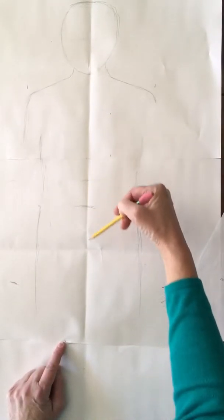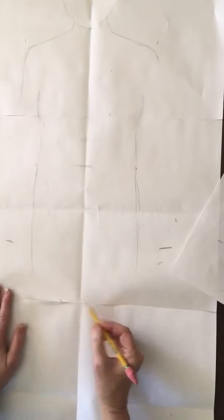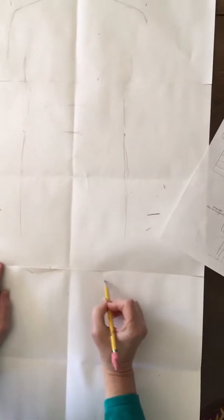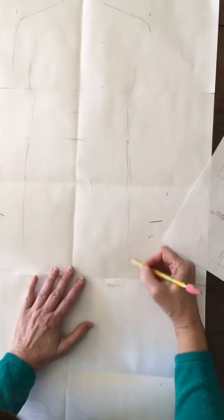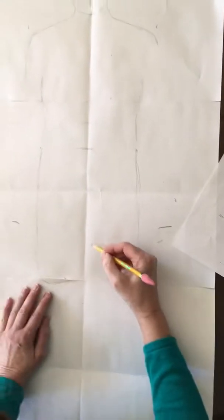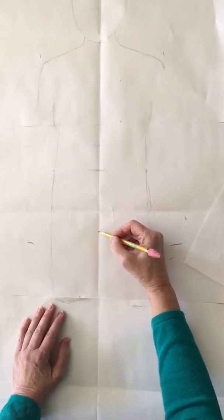So I'm going to just underneath it kind of indicate knees. I do outside line first, seems a little easier to me.